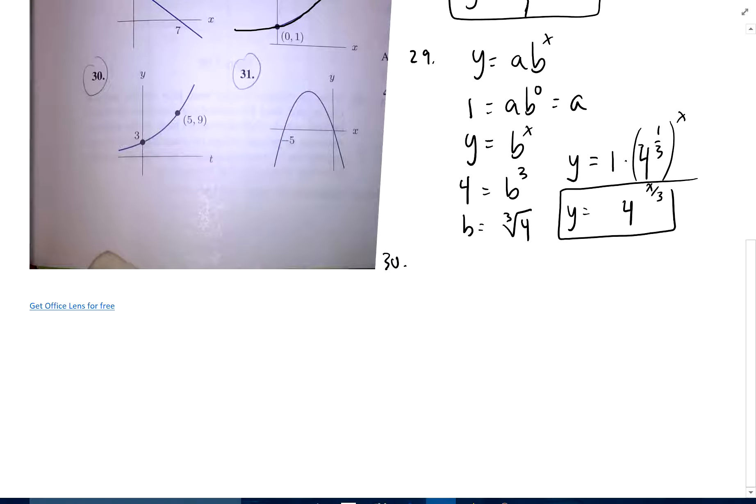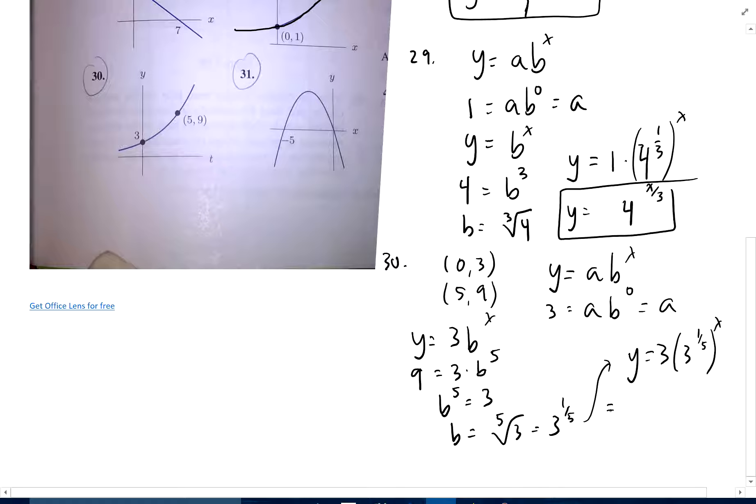Same type of problem, only now I've got (0, 3) and (5, 9). So we'll do the same thing. y equals a times b to the x. So when y is 3, x is 0, so that tells me that that's equal to a. So a is 3, so y equals 3 times b to the x. And then (5, 9), so when y is 9, x is 5. So solve for b. b to the 5th equals 3, so b would be the 5th root of 3, which is 3 to the 1 fifth power. So I end up getting y equals 3 times 3 to the 1 fifth to the x power, which is y equals 3 times 3 to the x over 5.